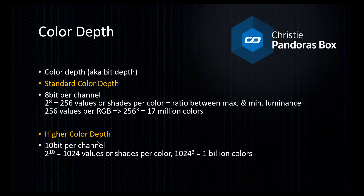The higher color depth is defined to be everything above 8-bit per channel. With 10-bit rendering, 2 to the power of 10 gives us 1024 values or shades per color — which is 4 times as much as with 8-bit rendering. If you calculate the total amount of colors we actually receive 1 billion colors. So just a change of 2 bits per channel gives us so many more colors that we can use in the content.